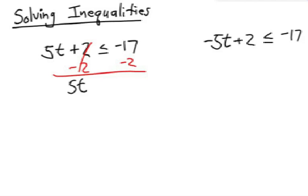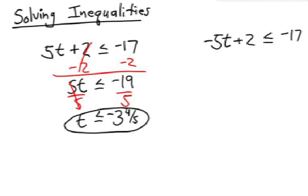5t less than or equal to negative 19. Divide each side by 5, and t is less than or equal to negative 19 divided by 5 is 3 and 4 fifths, negative. Now, notice that we did not change the inequality symbol, because in the last step, when we were multiplying or dividing, it was by a positive number, positive 5.